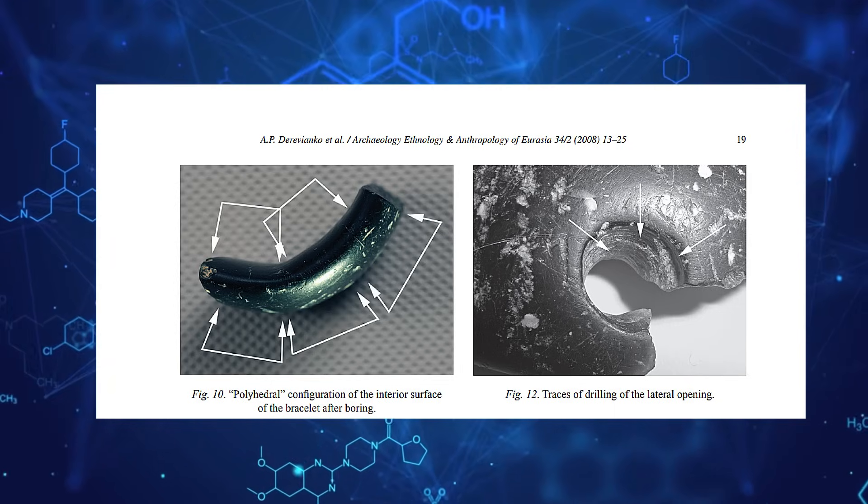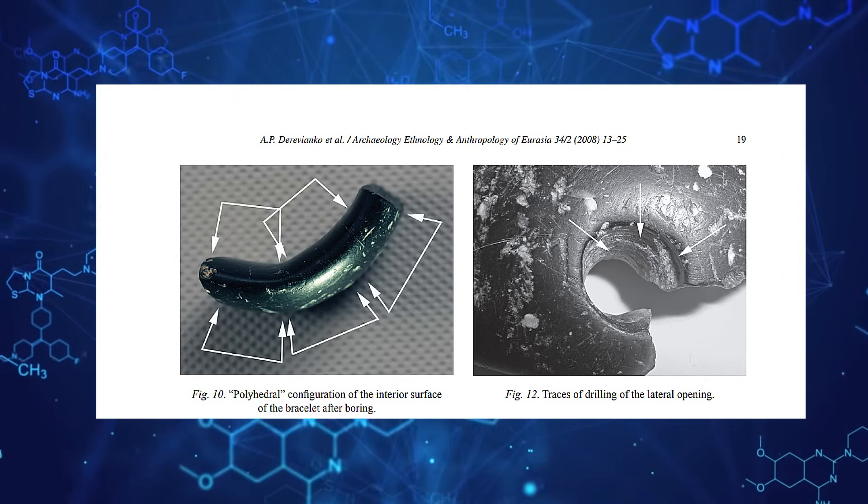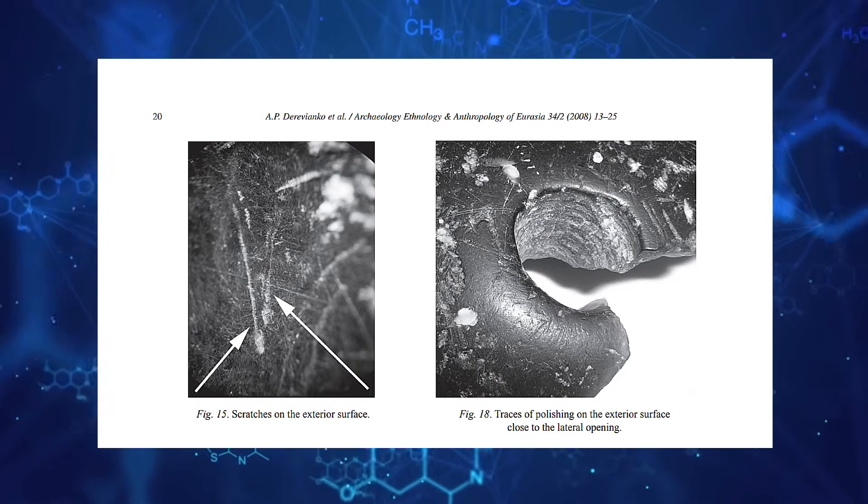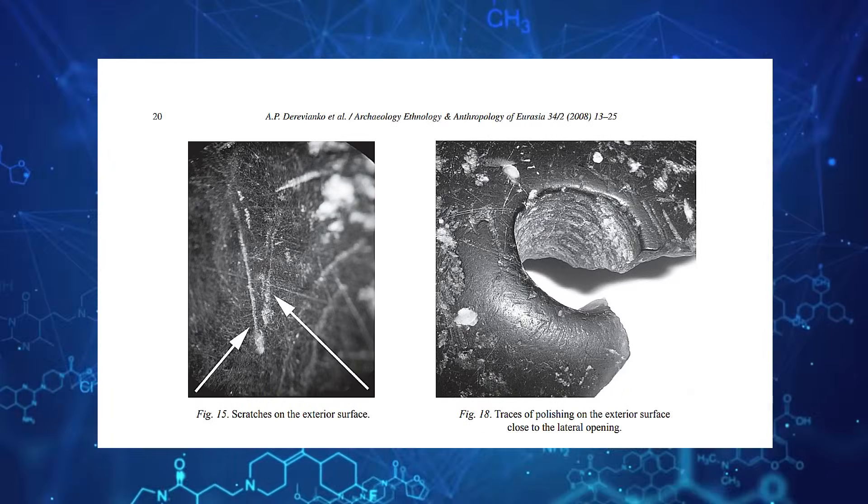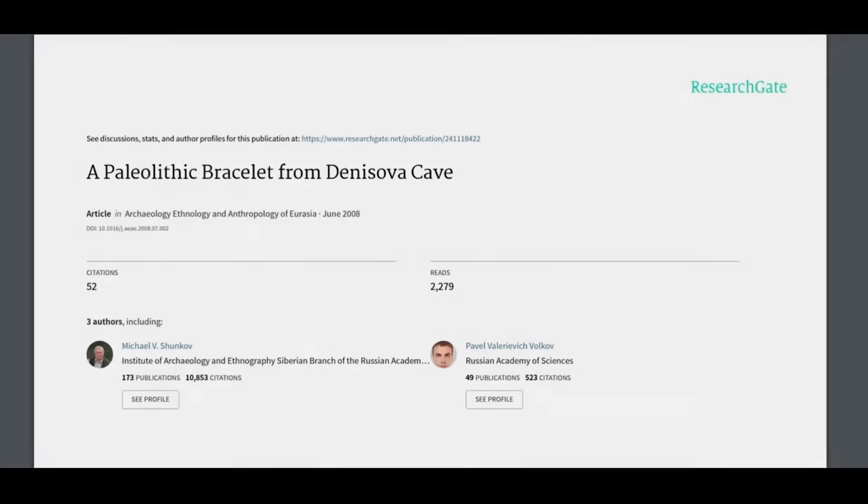The evidence of prolonged use suggests that it was a cherished object, imbued with meaning far beyond its material value. The breakage adds an element of drama to its history, hinting at the challenges and dangers faced by Denisovan society. These features also emphasize the bracelet's dual role as both a functional and symbolic object.